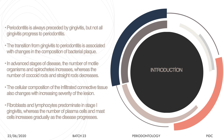Periodontitis occurs only when there is a break in the continuity of the epithelium and apical migration of the junctional epithelium begins. Until that migration happens, the condition is still called gingivitis. Once migration starts, it moves toward periodontitis. The transition from gingivitis to periodontitis is associated with changes in the bacterial plaque — most of the time there is a shift from gram-positive to gram-negative bacterial flora.